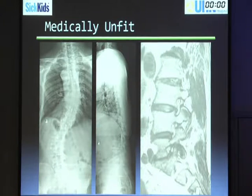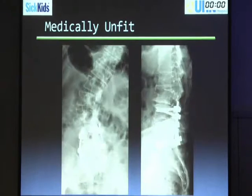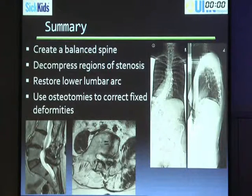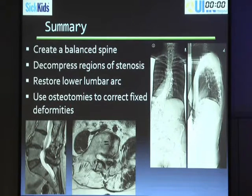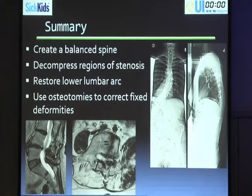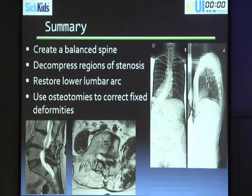In summary: create a balanced spine, decompress the regions that you need to, restore the lower arc of the lumbar lordosis — which is key — and then use osteotomies to fix your deformities when needed. Thank you very much.